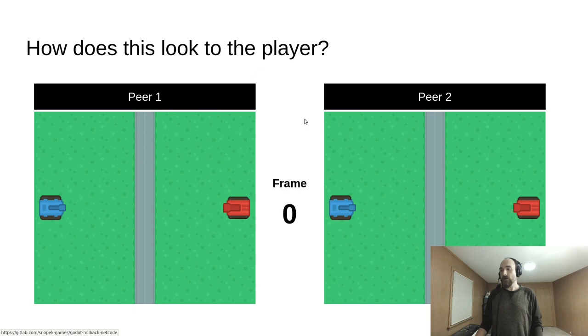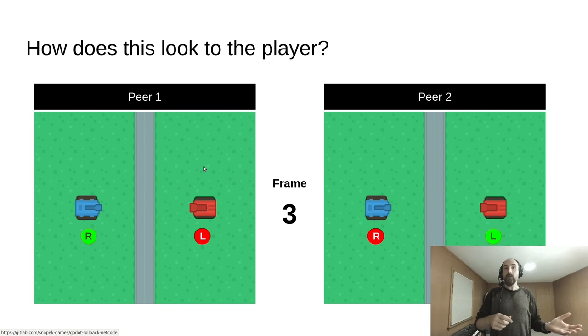Both peers start with the same initial state. On frame 1, player 1 presses right and immediately sees their tank move right, player 2 presses left and immediately sees their tank move left, but both see their opponent sitting still. Frame 2, same thing—they continue to see their own tank moving and their opponent staying in the same place.